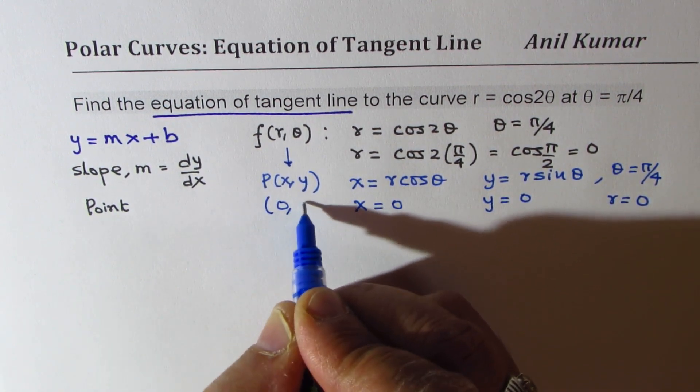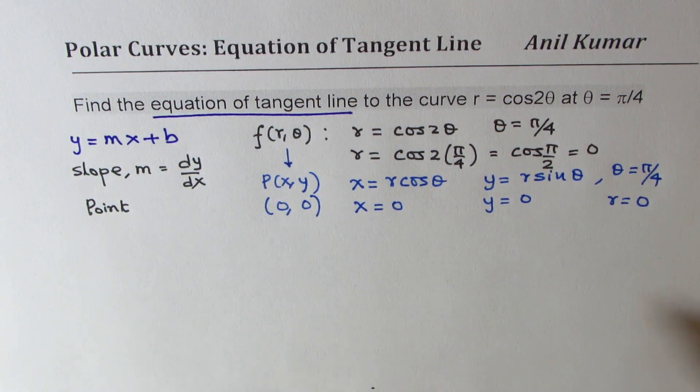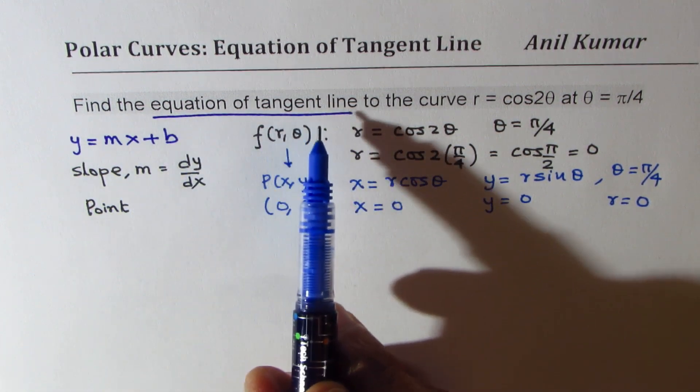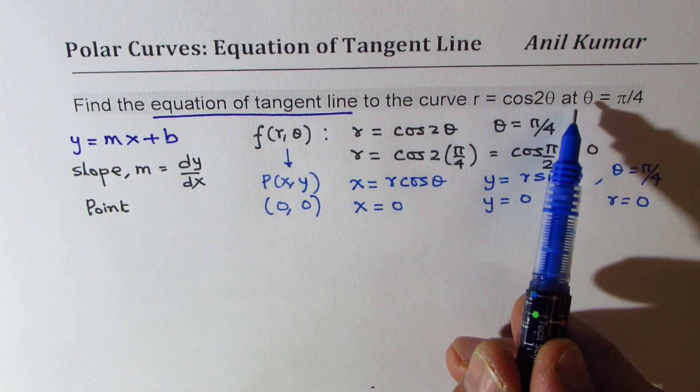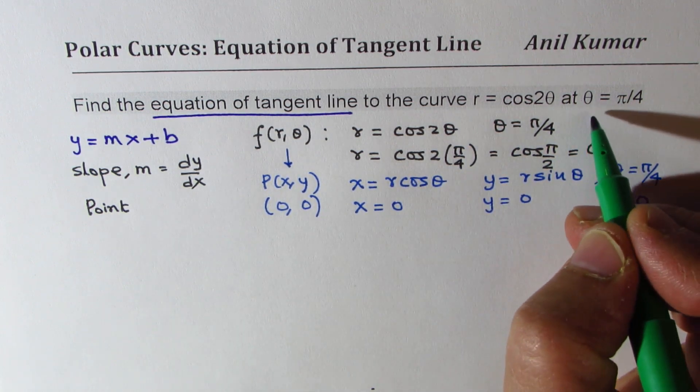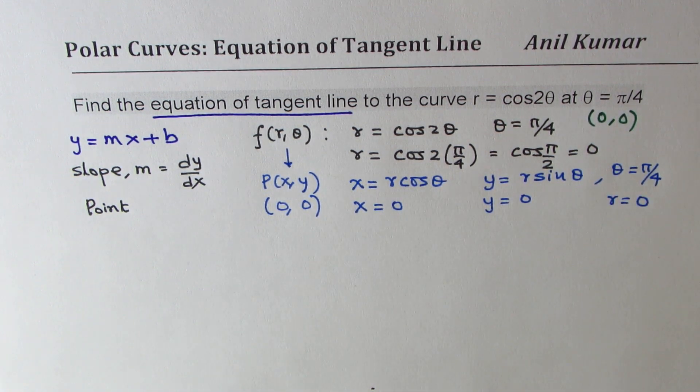So we are working at the origin. The point is very clear to us and it is at the origin. So we are trying to find equation of tangent line to this curve at theta equals pi by 4, which also happens to be the origin 0, 0. This part is absolutely clear. That really helps to visualize what you're trying to do.